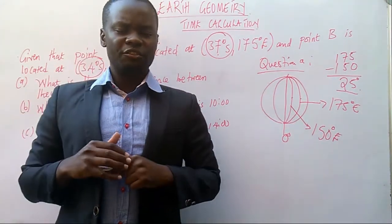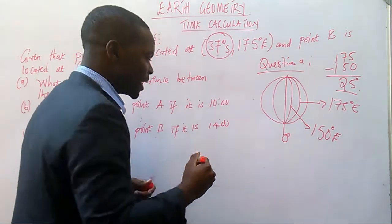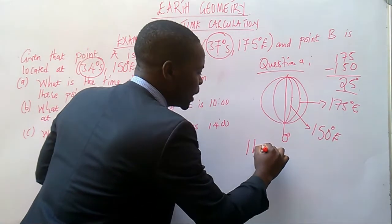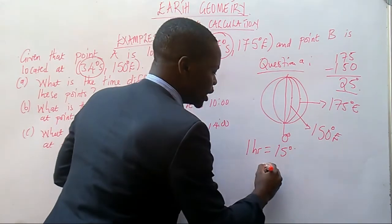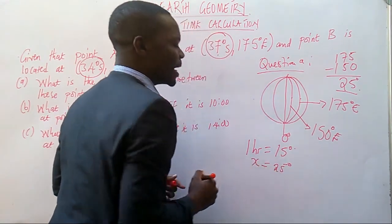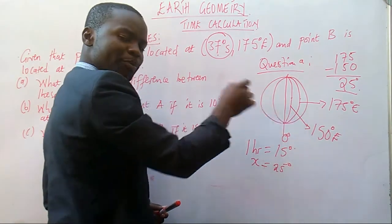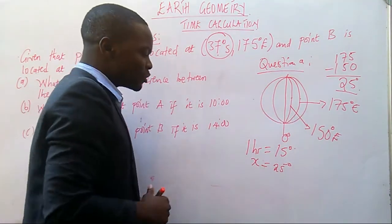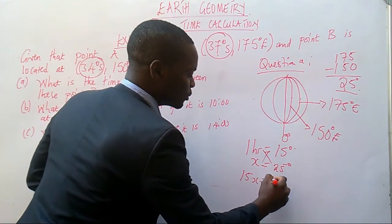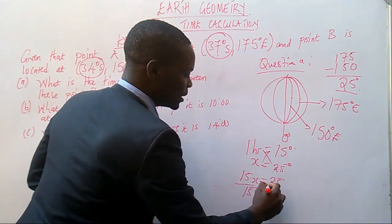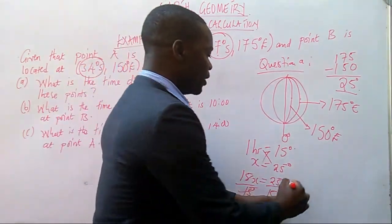In the previous video, I showed you an equation showing the relationship between degrees and hours. That equation was saying that one hour is equal to 15 degrees — this is a very important equation to know. Now the question is: how about 25 degrees? How many hours are there? Our aim here is to find out how many hours are in 25 degrees, which is the difference between the longitudes. For us to find x, we are going to cross-multiply: x times 15 equals 1 times 25, which is 25. When you divide both sides by 15 to isolate x, when you divide 15 into 25, it's 1.